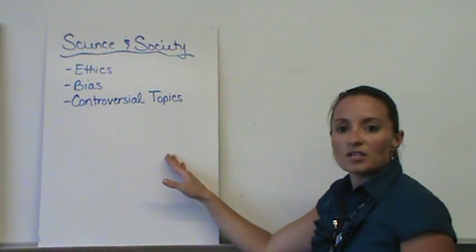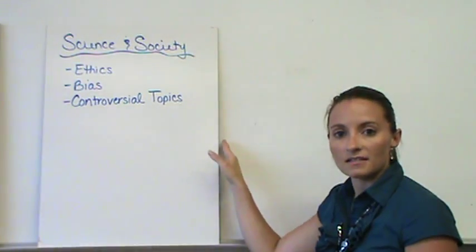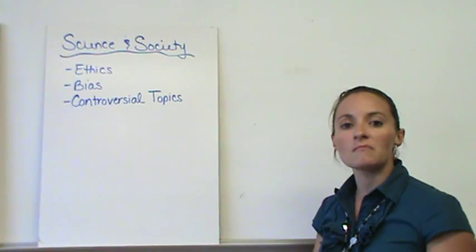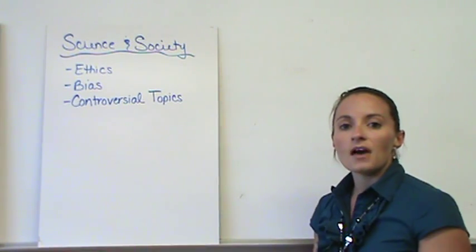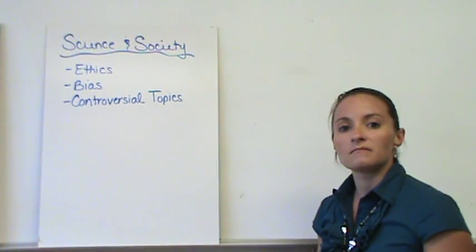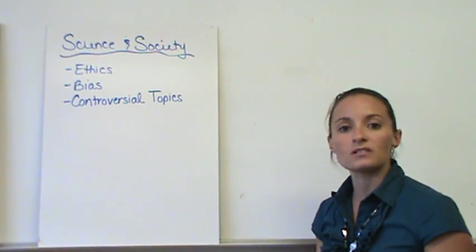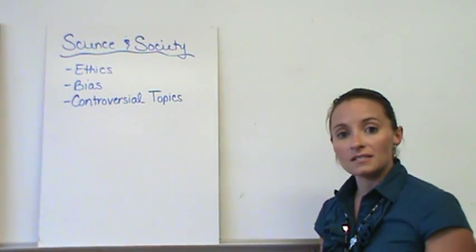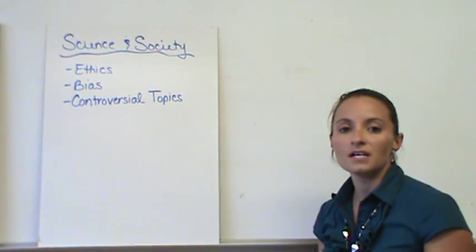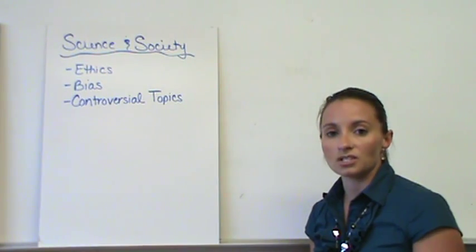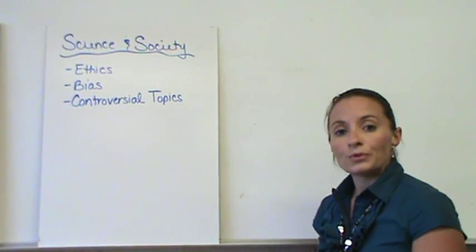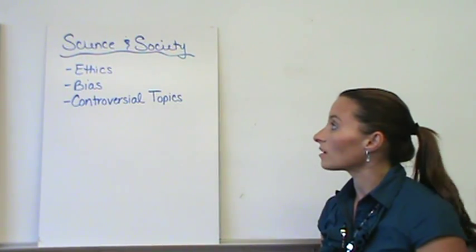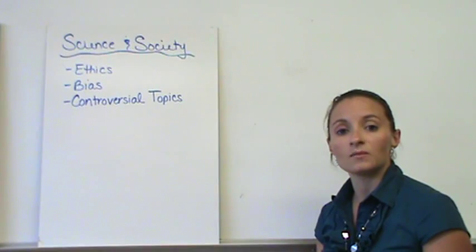Finally, we're going to talk about some of the major issues in science and society. One of them being ethical issues. There are some major ethical issues in science that require certain rules to follow. Because of that, it also sometimes limits the ability of scientists to do what they need to do. But those rules and laws are there to help protect our people, animals, and other things. So there are certain things that we cannot do.